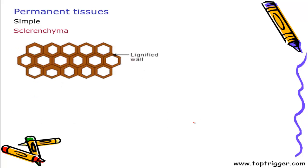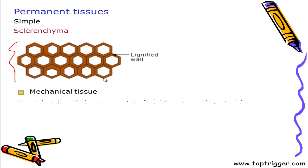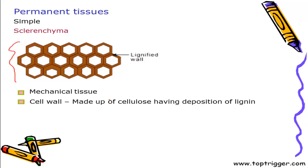Finally, sclerenchyma. In sclerenchyma, as we can see in the diagram, there is no intercellular space — it is a mechanical tissue. Cell wall is made up of cellulose with deposition of lignin and since it is lignified, it is a dead tissue because wherever lignin is present, all cells are dead.